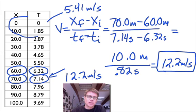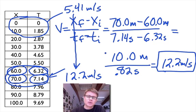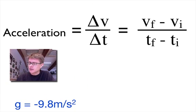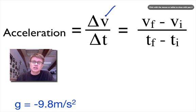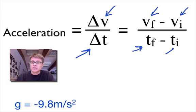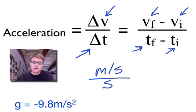When velocity increases, that means we're accelerating. Not only is velocity important, but what happens to velocity over time is also important — that's what acceleration is. Acceleration is the change in velocity over the change in time: final velocity minus initial velocity divided by final time minus initial time. The units are a bit unusual: meters per second divided by seconds, which we write as meters per second squared.